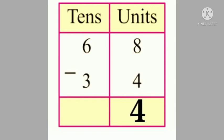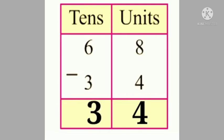Now in the tens column, 6 minus 3 is equal to how much children? Tell me. Yes, 6 minus 3 is equal to 3. So 68 minus 34 is equal to 34.